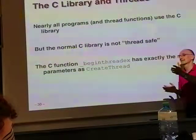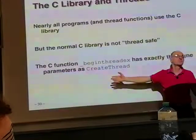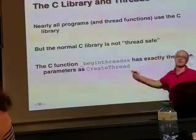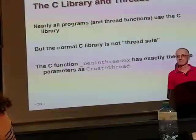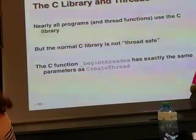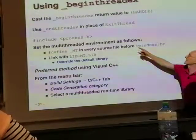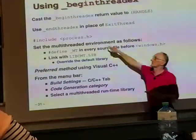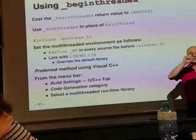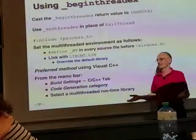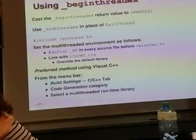From the programmer's standpoint, the rule is simple: if you want thread-safe usage of the C library, call _beginthreadex. If you know you're not using thread-critical C library functions, you can use CreateThread directly. The two are essentially equivalent — _beginthreadex uses CreateThread internally. And with _beginthreadex, you use _endthreadex instead of ExitThread as the symmetric closing function.